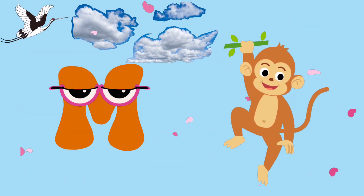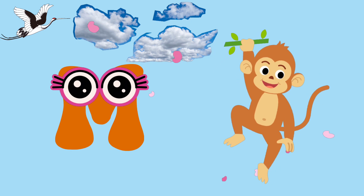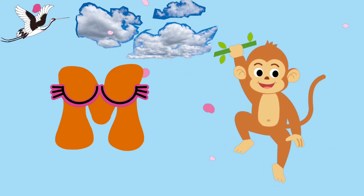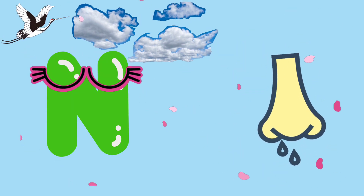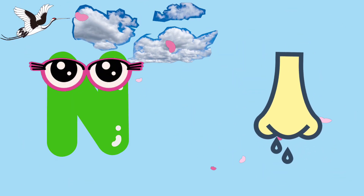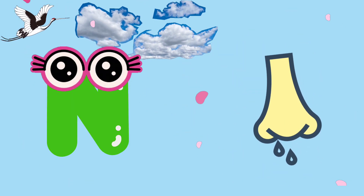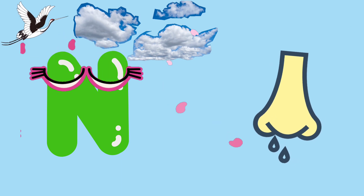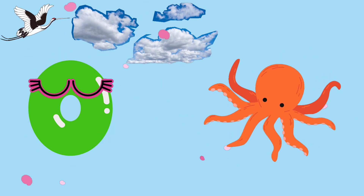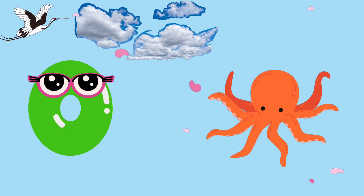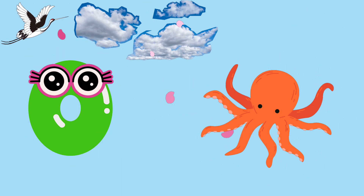M is for monkey, monkey. N is for nose, nose. O is for octopus, octopus.